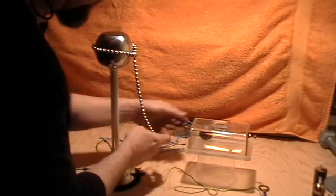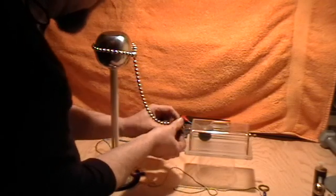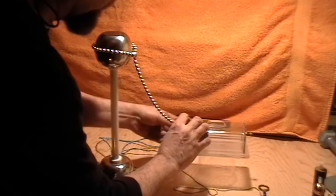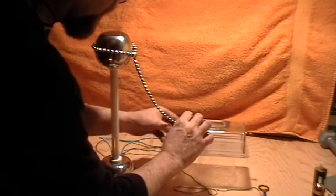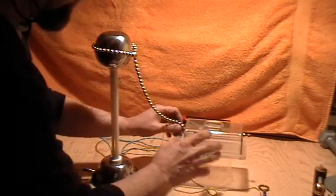For you electrostatic experimenters, the bead chain makes a very good conductor for high voltage. It acts like a much thicker conductor in terms of the field around it so it doesn't blow off corona like a thin wire would and yet it's very flexible as you can see.